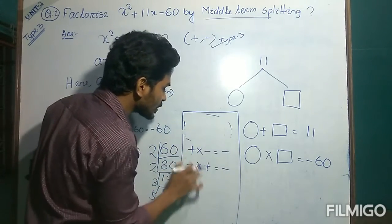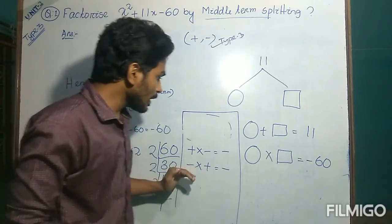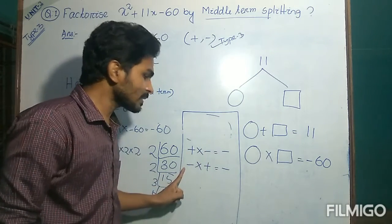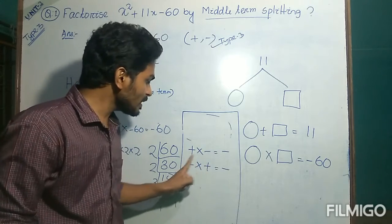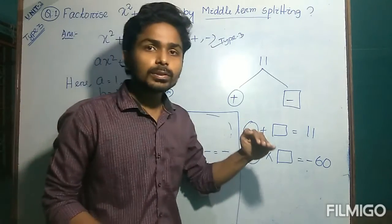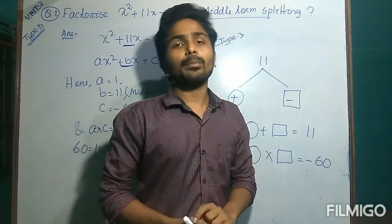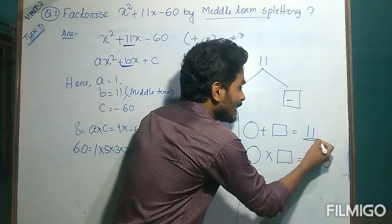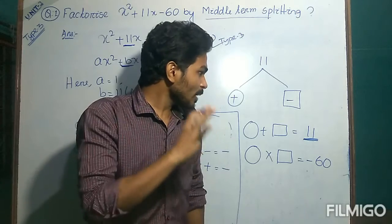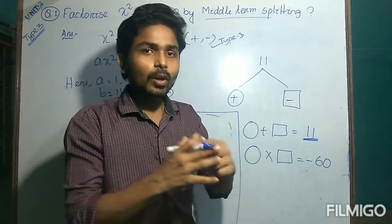From the remaining two cases, we must choose which one is correct. It is now confirmed that out of these two numbers, one must be positive and another must be negative. Now we will choose which one must be positive. The larger number must be positive and the smaller number must be positive — that is also important because we need plus 11 as a positive sign after addition.